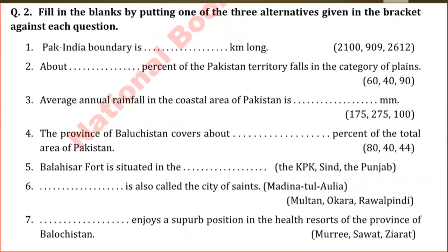MCQ question number 2: The Pak-India boundary is 2100 kilometers long. In the old book it is given as 1600, but in the new book it is 2100 kilometers long. About 10% of Pakistan's territory falls in the category of plains. Annual rainfall in the coastal area of Pakistan is 175 millimeters. The province of Balochistan covers about 44% of the total area of Pakistan. Balochistan is the biggest province of Pakistan.